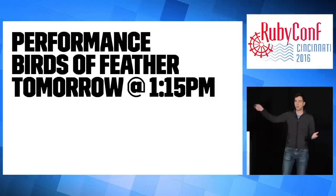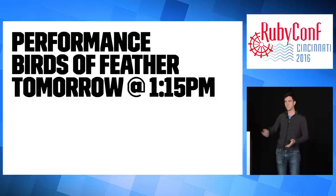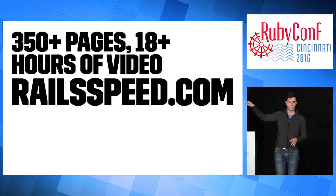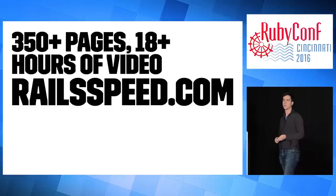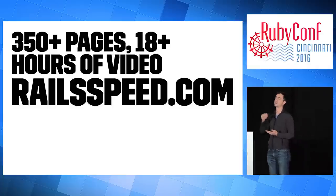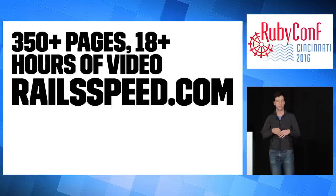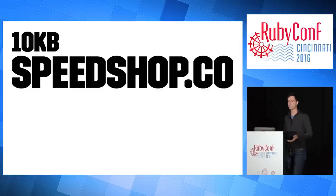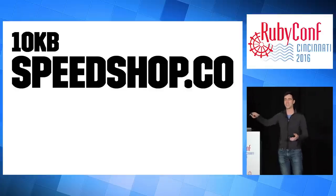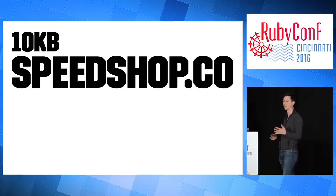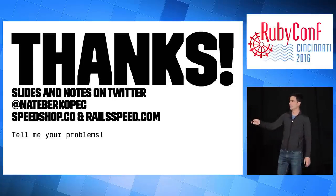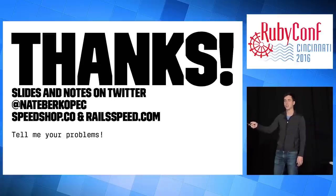That's all I had to talk about. Tomorrow there's a performance birds-of-a-feather meeting at 1:15pm — if you have questions, I'd love to see you there. I have an entire course on tuning Rails application performance at railspeed.com — 18 hours of video with interviews and screencasts, over 350 pages of content covering front-end performance, Ruby performance, database performance, and how to measure and profile. It's being moved to speedshop.co, which is all 10 kilobytes and everything's inlined — super performance optimized. The slides and notes for this talk are on my Twitter handle, at nate_berkopec. You can find me at speedshop.co and railspeed.com.